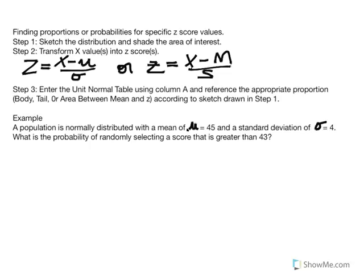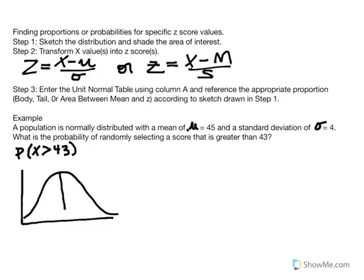Let's consider this example: a population is normally distributed with a mean of 45 and a standard deviation of 4. What is the probability of randomly selecting a score that is greater than 43? We identify the probability statement: what is the probability of selecting an x-value greater than 43? We sketch our normal distribution with the mean of 45 in the center. Since 43 is less than 45, it falls to the left of the mean, and we are interested in the area to the right of 43.